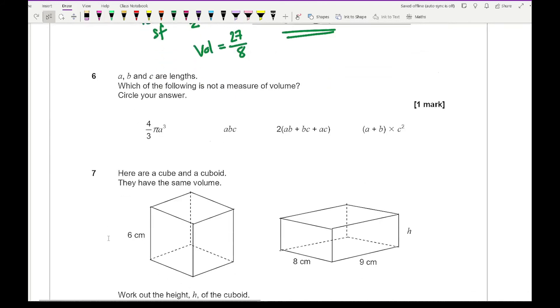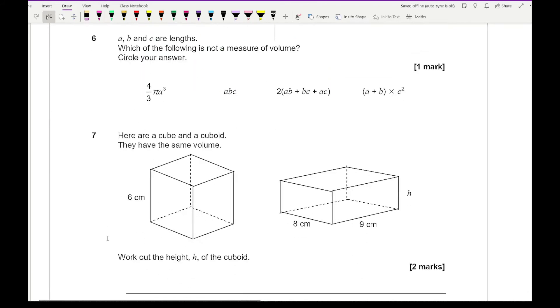Now for question 6, it says that A, B, and C are lengths. Which of the following is not a measure of volume? Now in terms of this, this is about dimensions of formulae. So in terms of volume, what I'm wanting is each term to have 3 variables, so it's got to have 3 letters. So this one has got 3 letters because pi is a number. This one's got 3 letters. So let me just read the question because it says which one isn't. So that one is a volume, that one is a volume. This one is not a volume because if I expand the brackets, I'm going to end up with 2 letters in each term. And this one here, well if I've got C squared times A plus B, I expand the brackets and I'm going to end up with AC squared plus BC squared, in which each term has still got 3 letters. So therefore that one is valid. So the one that isn't is the third one.